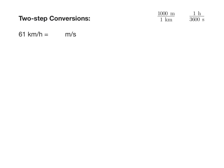In this video we're going to look at how to solve two-step conversions. We're asked to convert 61 kilometers per hour into meters per second using the conversion ratios: 1000 meters equals one kilometer and one hour equals 3600 seconds.